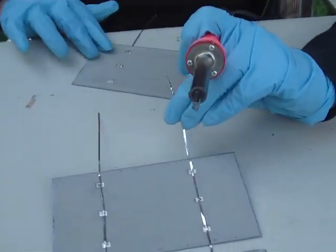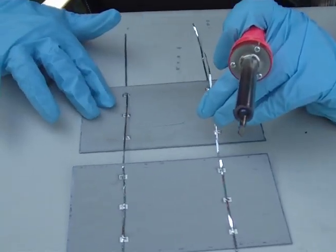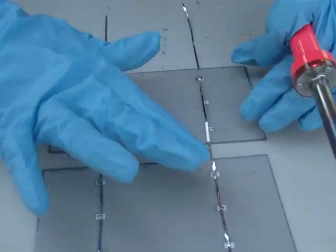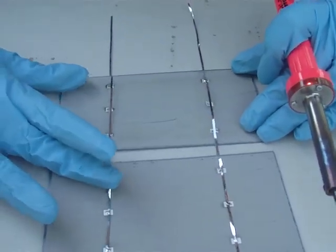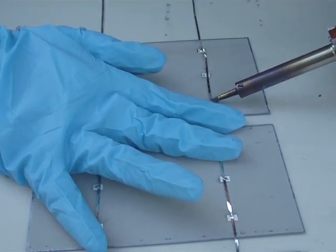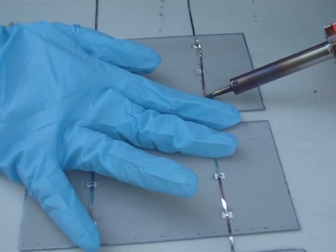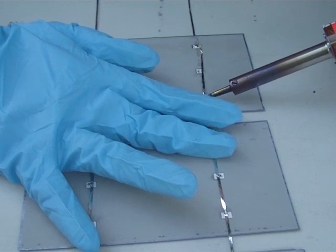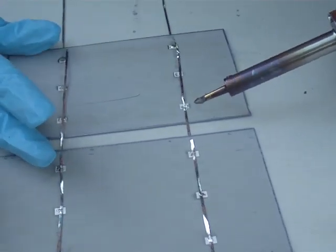And then you just flip these back and you line them up where you need them to go. Just be careful not to touch yourself and just solder it on down. Make sure your wires are flat.